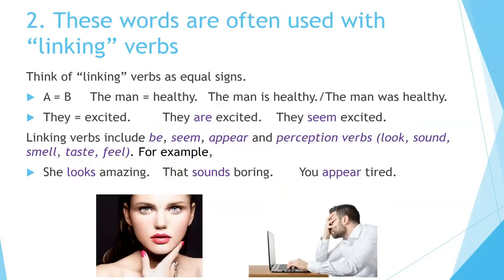These words are often used with linking verbs. Think of linking verbs as equal signs: A equals B. For example, the man is healthy; the man was healthy. Linking verbs can be used in any tense. They are excited; they seem excited. Linking verbs include be, seem, appear, and perception verbs such as look, sound, smell, taste, and feel. For example: she looks amazing; that sounds boring; you appear tired.